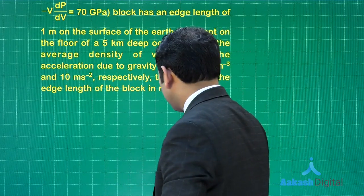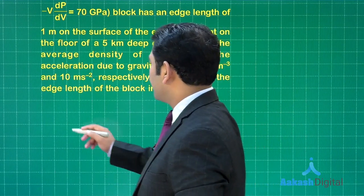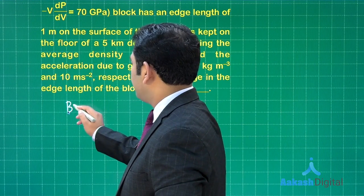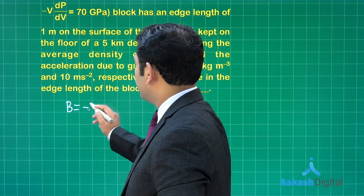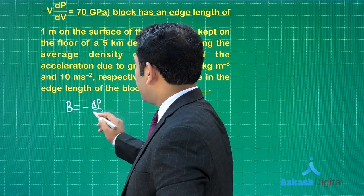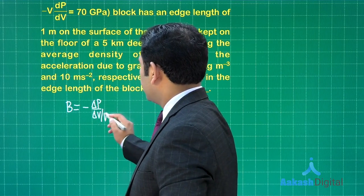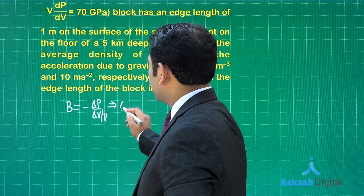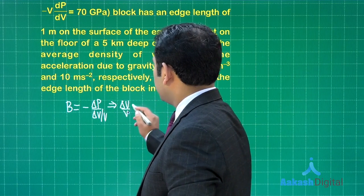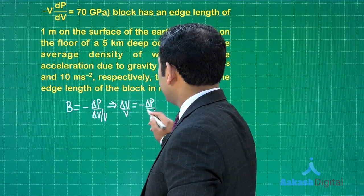Average density of water has been given because the density varies as you go deeper, but average is given for our simplicity. The expression of bulk modulus is minus delta p by delta v by v. So this gives me delta v by v is minus of delta p upon b.